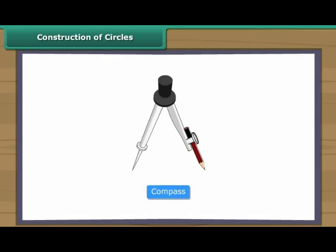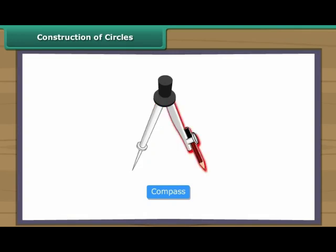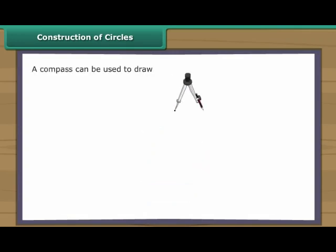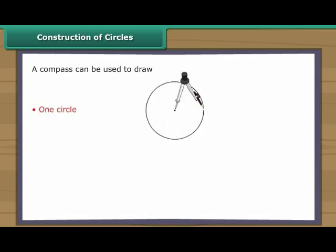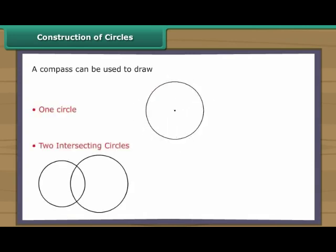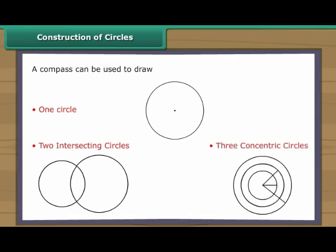We draw circles with the help of a compass. A compass is an instrument with two arms. While one arm remains fixed, the other arm with the pencil moves freely. Let us use a compass to draw: one circle, two intersecting circles, and three concentric circles.